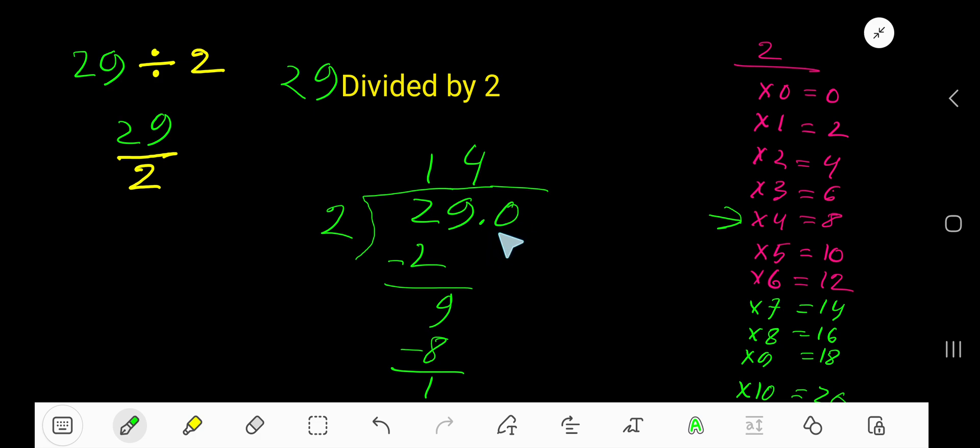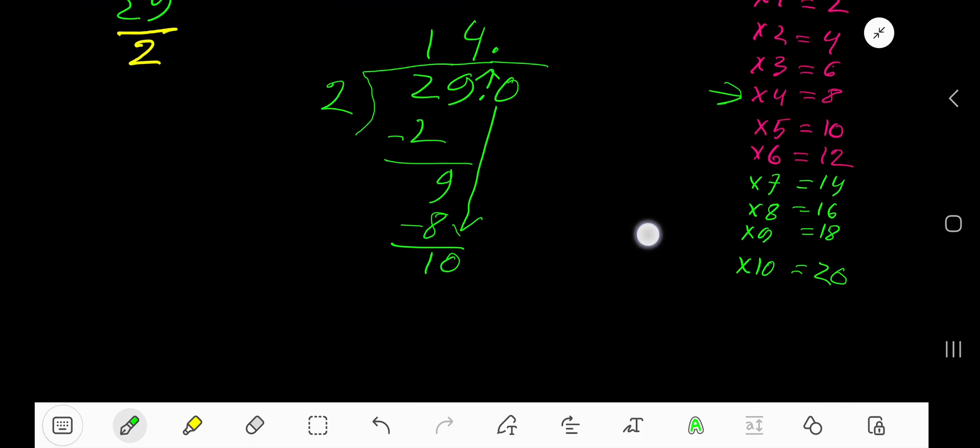Taking decimal then 0. Bring down the first 0. And before the 0, there is a decimal. Decimal must come to the quotient directly.